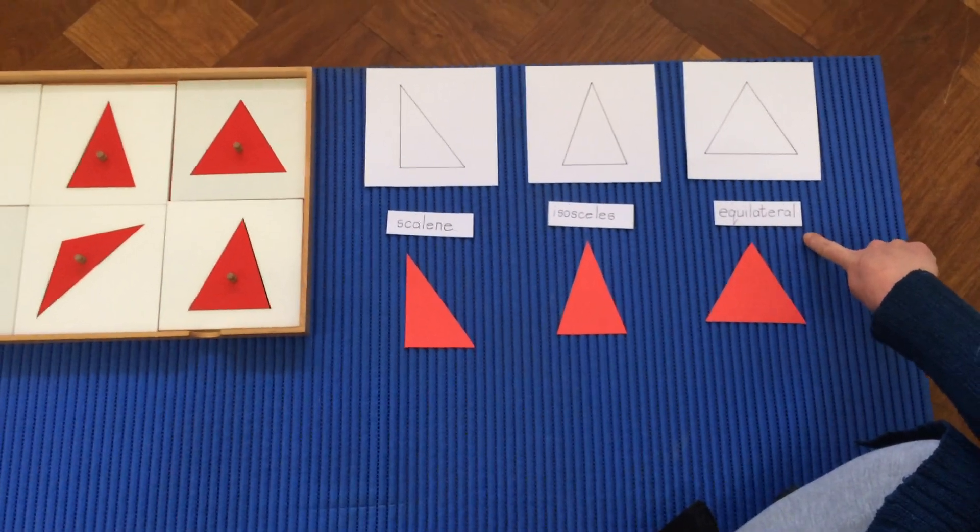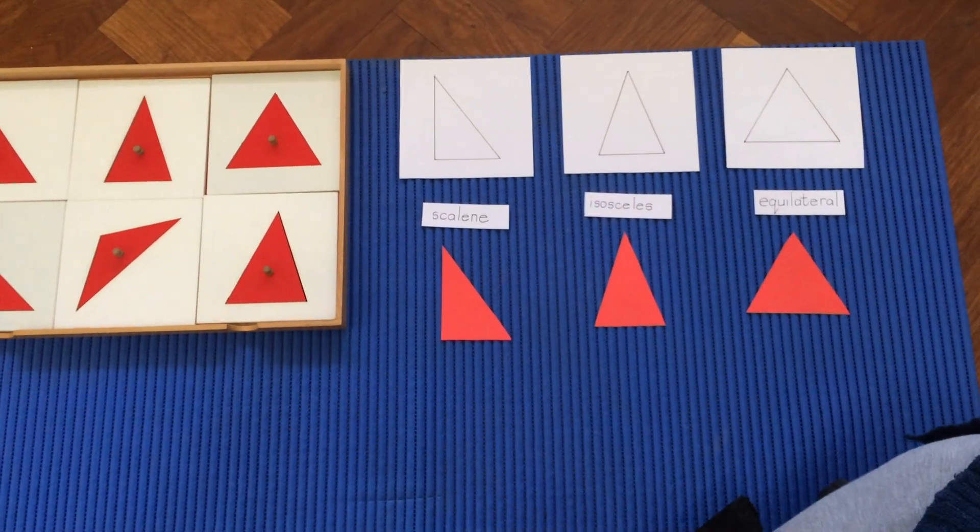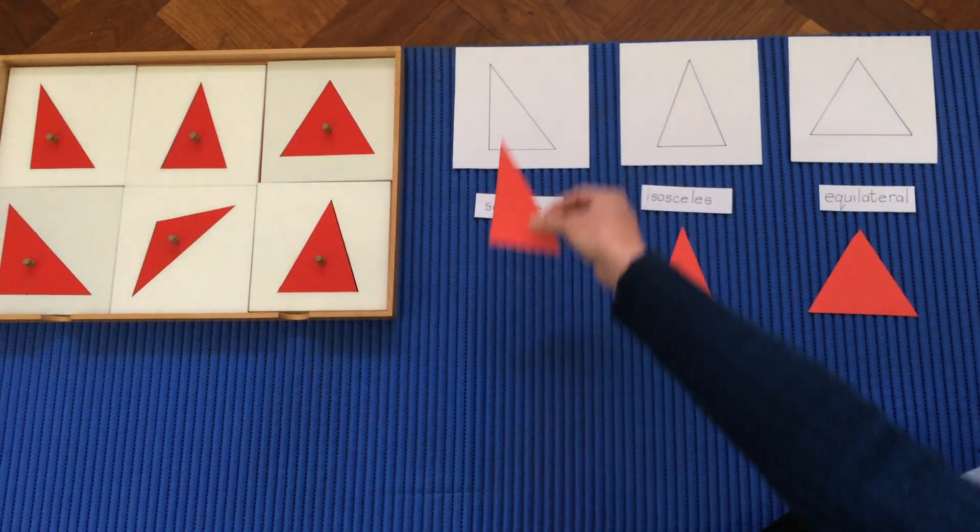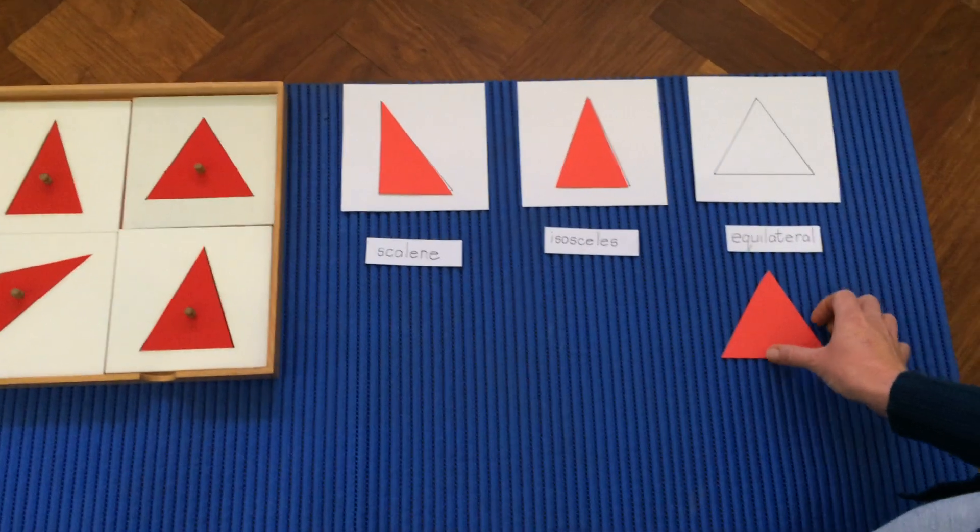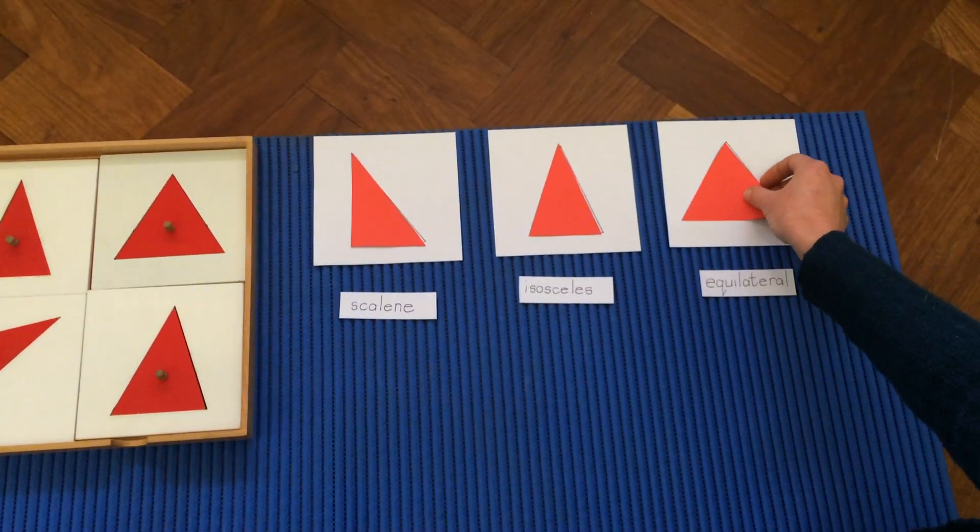All three sides the same is equilateral. Scalene, isosceles, equilateral.